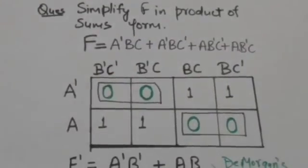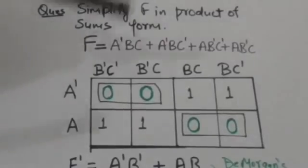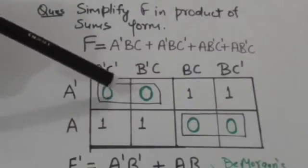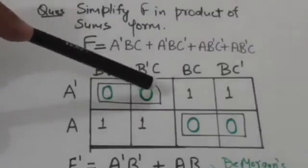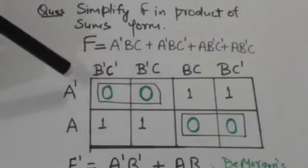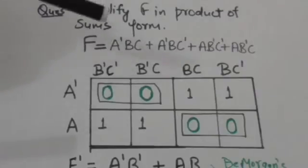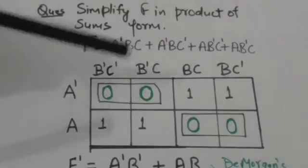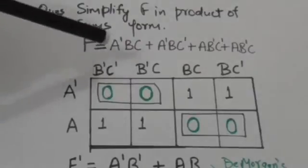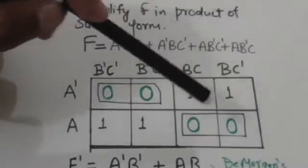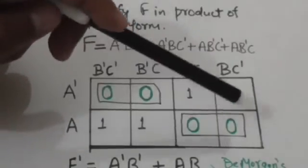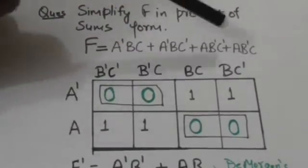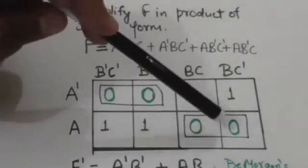Now we have to find variables which are common in all squares of a group. In this group, the variables which are common to the squares are a-not and b-not. So the term which will be included in the complement of the function f would be a-not b-not. The variables which are common to the squares of this other group are a and b, so a new term a·b is formed.